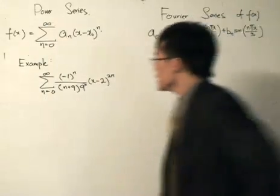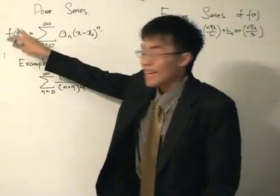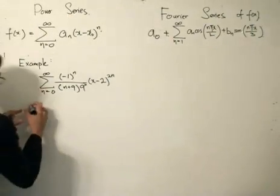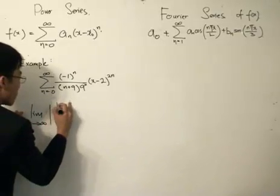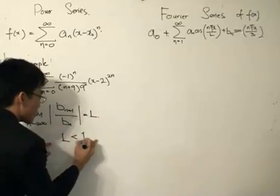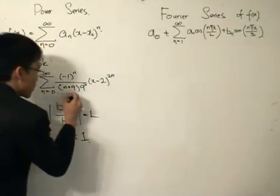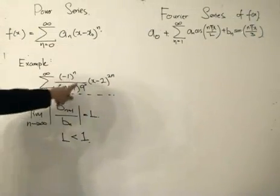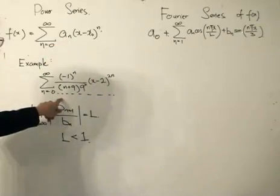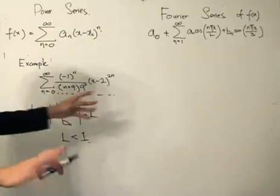For a power series, we say it converges at a certain point when we pick a value of x within the radius of convergence from the center of the series. The test we use is: the limit as n tends to infinity of B_(n+1) divided by B_n equals L, and we get convergence when L is less than or equal to 1. Here, B_n is the term of the power series — be careful of that. a_n is the function in terms of n, while B_n is the term inside the series itself.